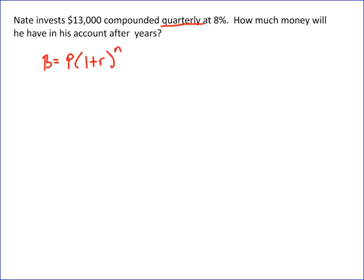So unfortunately Nate doesn't get to compound eight percent quarterly, he only gets to compound two percent, eight divided by four, so that's your quarterly rate. And so you write your formula: the balance is equal to 13,000 times one plus the quarterly rate, which is two percent, and then raised to the amount of times.